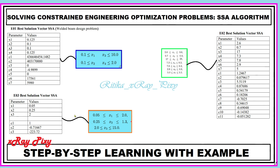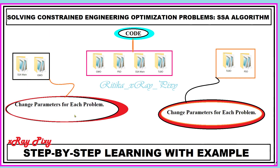For the code, you will download all these files in a separate folder for easy testing. We will change parameters as needed — different problems have different cost functions and constraints. We change the parameters for each problem in the main file, and the parameter settings are the same for SSA, GWO, TLBO, and PSO. You can check in the help file.